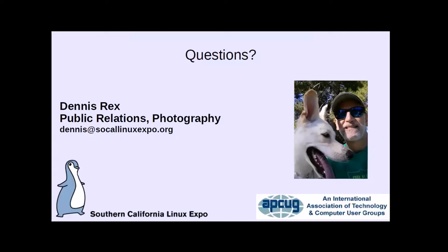Someone was interested in UFRAW — where do you get it? I believe it's UFRAW.org. If you Google UFRAW, it should be pretty easy to find. It's an open source project, and I believe there are also links to it on GIMP.org. On Linux, I download the source code, compile it, create a Slackware package and install it. But effectively, it is simply a plugin to the GIMP.